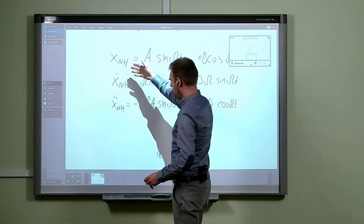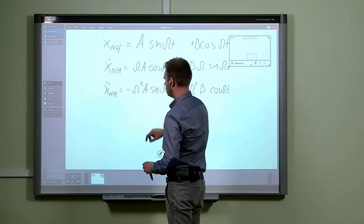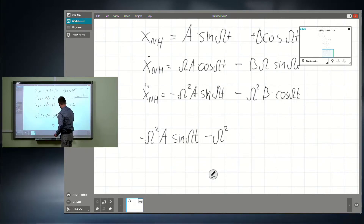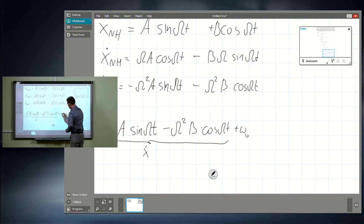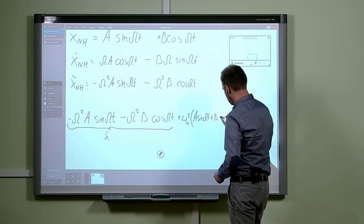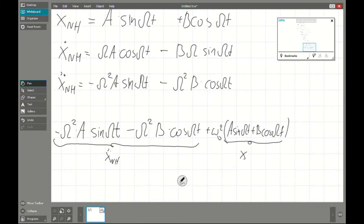Now, having those derivatives, we put them into our non-homogeneous equation. The result is: minus capital omega squared times a times sine omega t minus capital omega squared times b times cosine omega t, plus omega zero squared times x — meaning a·sine omega t plus b·cosine omega t — equals f₀ times sine omega t on the right-hand side.